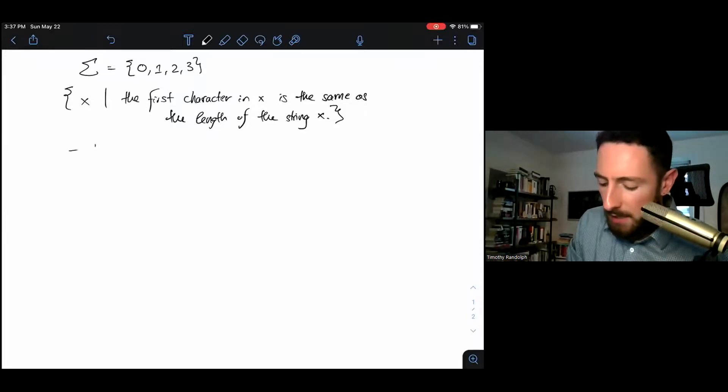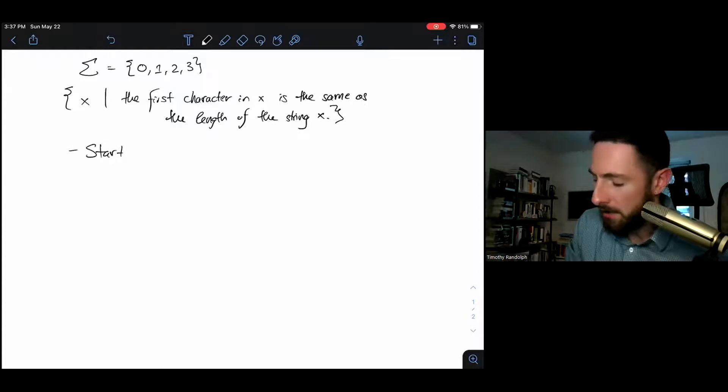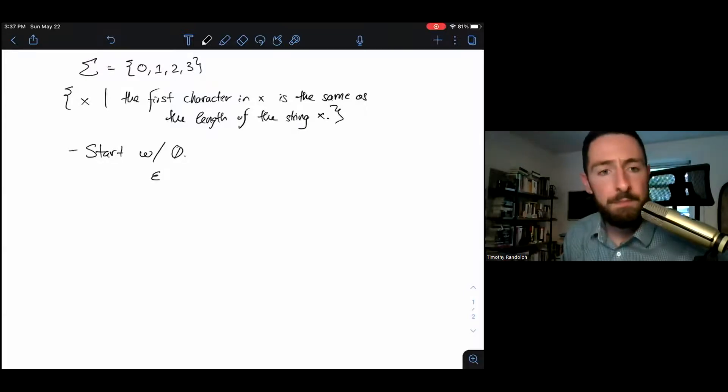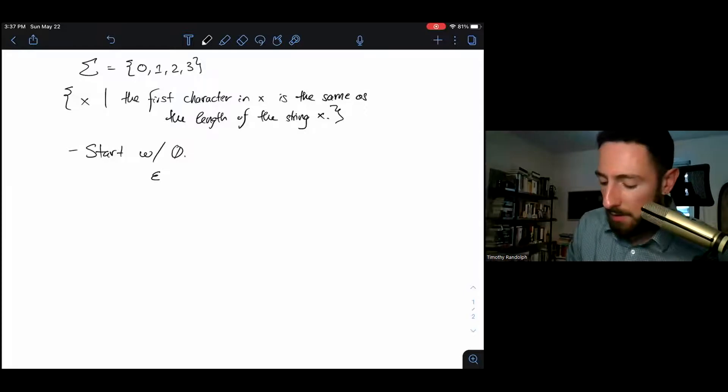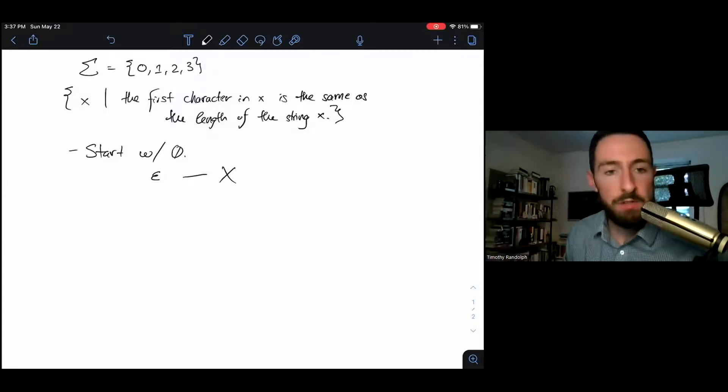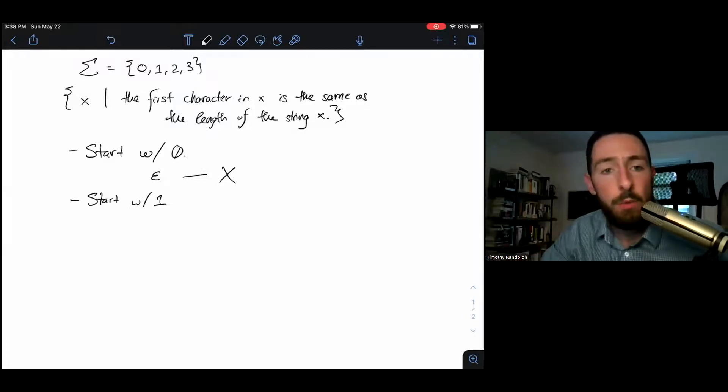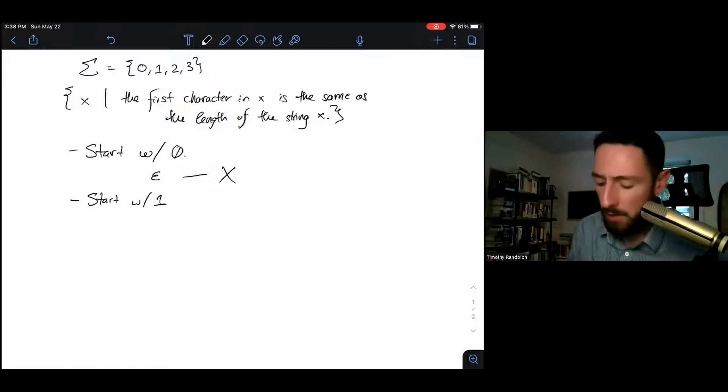This language is interested in the first character in the string. Suppose we have some string that starts with zero. The first character in the string is zero, and then to be in the language, the length of the string must also be zero. But the only string of length zero is the empty string epsilon, and the empty string doesn't have any characters in it. So there are no strings of length zero that start with zero. We can rule that case out directly. If my string starts with one, I'm looking for a string where the first character is one and the length of the string is one. That's just going to be one.